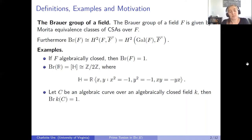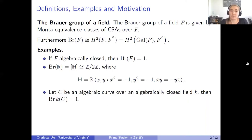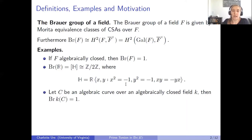In the case of the real numbers, there is one non-trivial Brauer class, and that's the Brauer class of the quaternion algebra. The quaternions H can be written as the free algebra over the real numbers with two generators x and y such that x² = −1, y² = −1, and when you commute them you get a minus sign: xy = −yx.